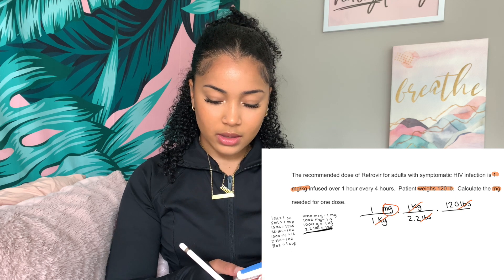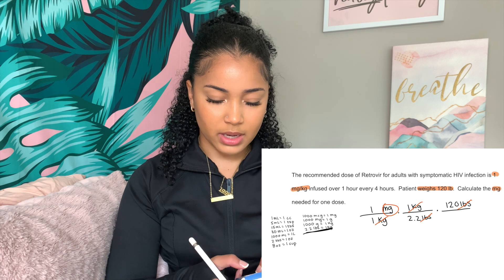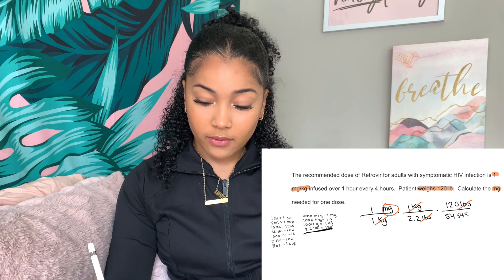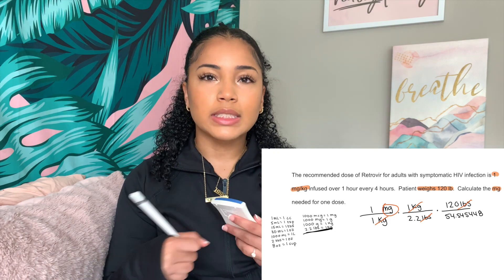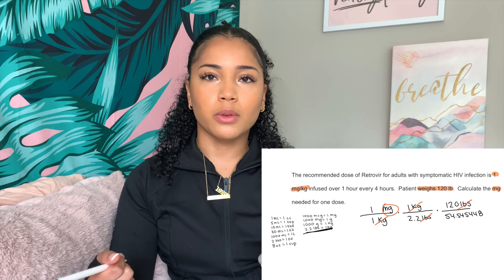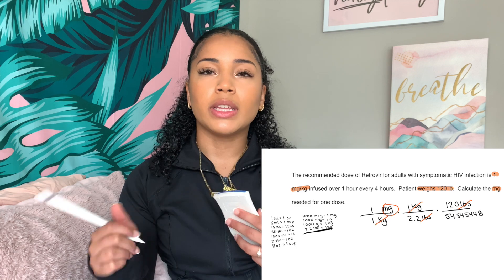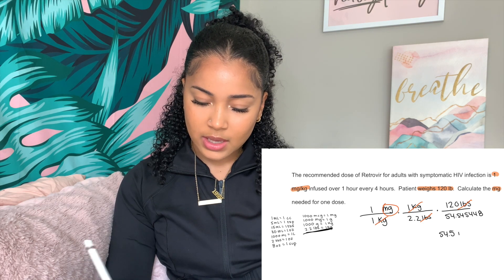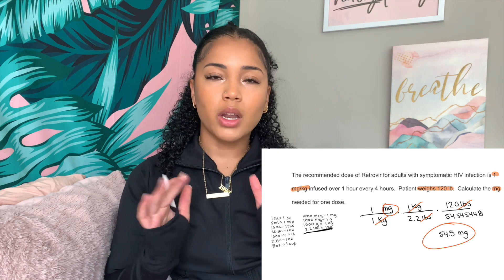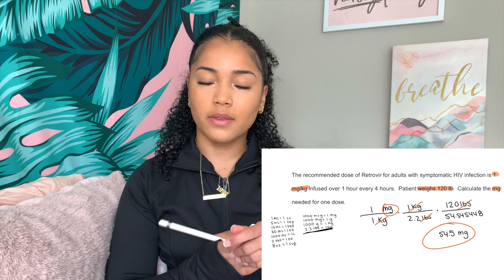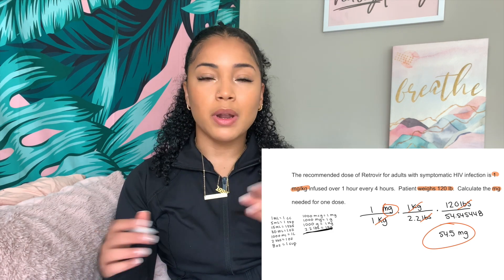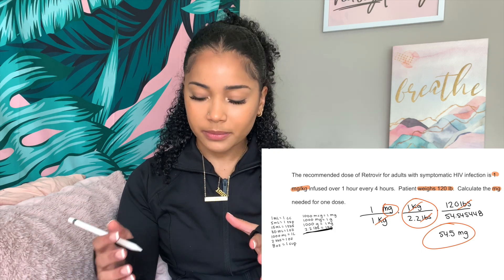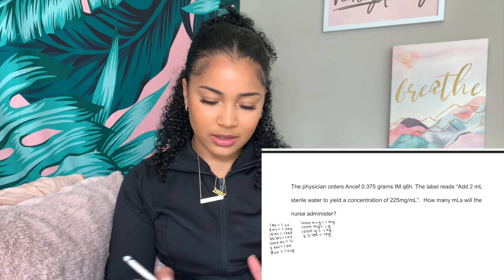So: one milligram over one kilogram, times one kilogram divided by 2.2 pounds, times 120 pounds. The answer is 54.5448 — but we have to round. At my school we round to the nearest tenths place, so the answer is 54.5 milligrams. You never want to round in the middle of your equation, which is why I do unit conversions inside the equation rather than separately — so I'm not accidentally rounding early.